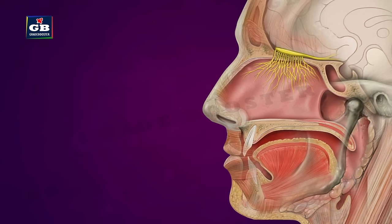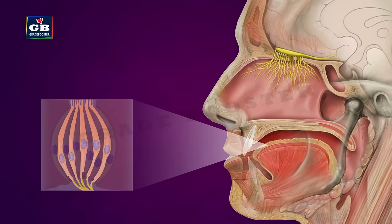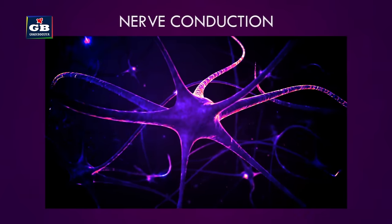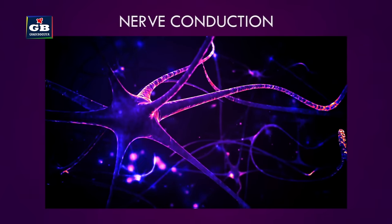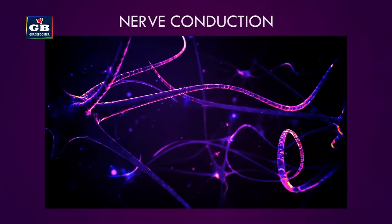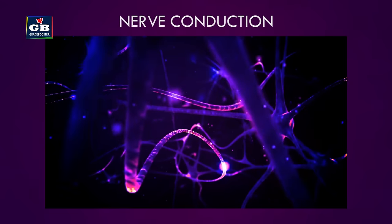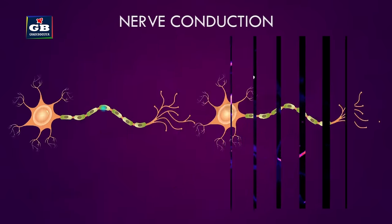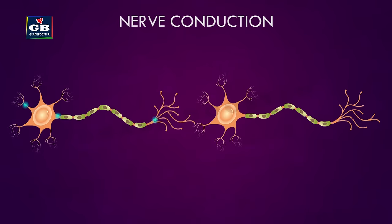The receptors present in the nose are called olfactory receptors — they detect smell. The receptors present in the tongue that help in detecting taste are called gustatory receptors. Neurons carry information to different parts of the nervous system; this is called nerve conduction.